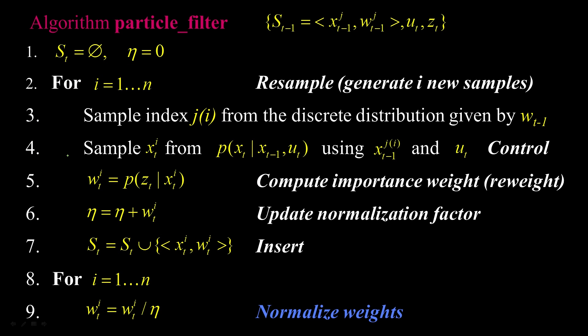Now we're all done, except one problem: our weights don't sum to one, because they were whatever they were — we just did this multiplication. So all we have to do is, because we've been keeping track of the sum of the weights — that's the eta — we divide all the weights by that value. That's normalizing the weights. When we're done, we have a new distribution, a bunch of particles. Each particle is at a particular state, each particle has a weight, and the sum of those weights is one. That's a valid sampling-based representation of the probabilistic density. And that's all of particle filtering.